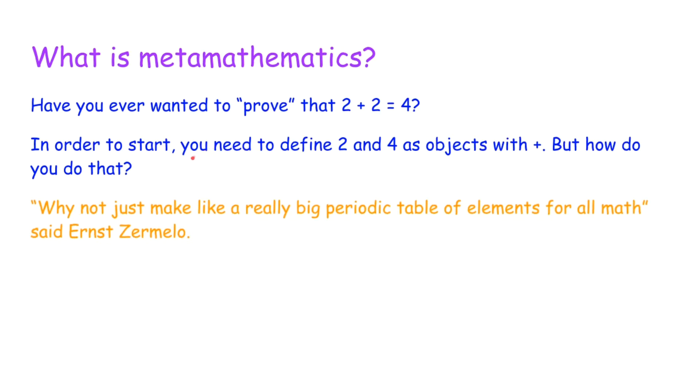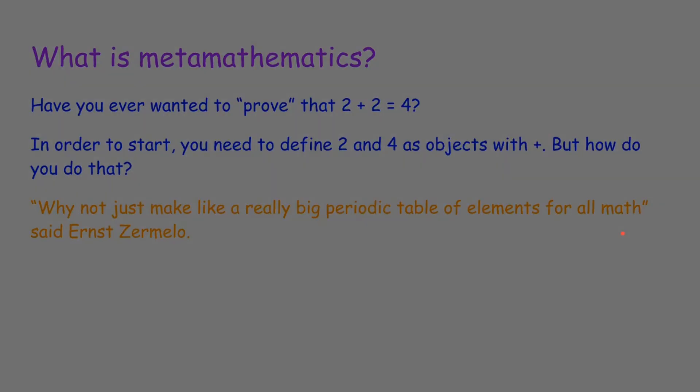Well, Ernst Zermelo had this idea. He said maybe everything should be sort of like real life, in that it's made out of small atoms, which are really just elements. And then everything is just sort of a group of those atoms, those elements, together. And so he came up with basically a really big periodic table of elements for all of math.